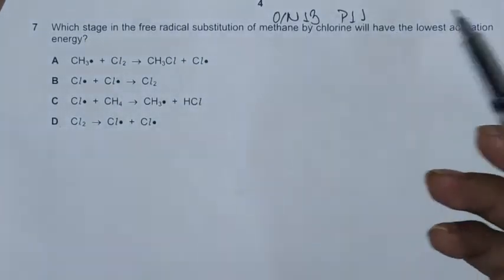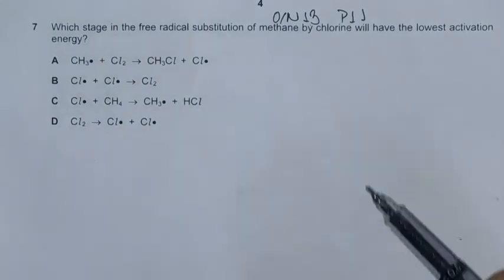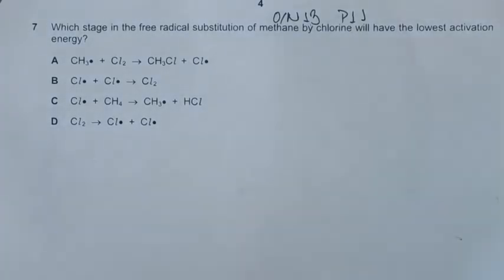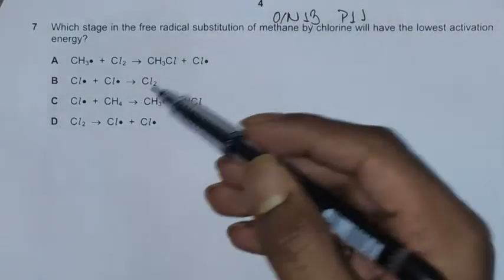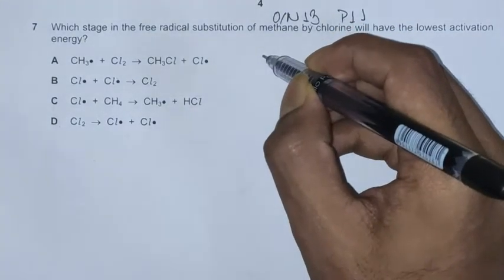There are two approaches we can use to solve this question. The first one is considering the properties of free radicals. In free radical substitution, we are mostly involved with the chlorine free radical. Free radicals are very reactive because they have an unpaired electron.